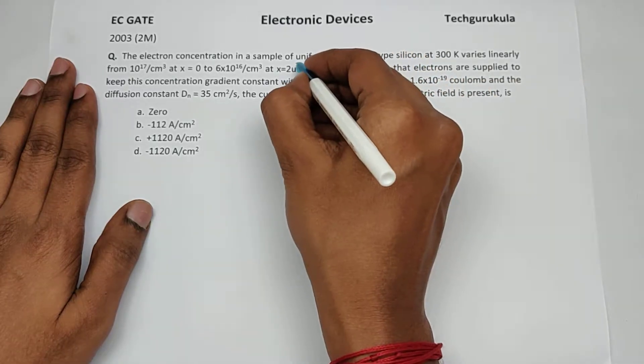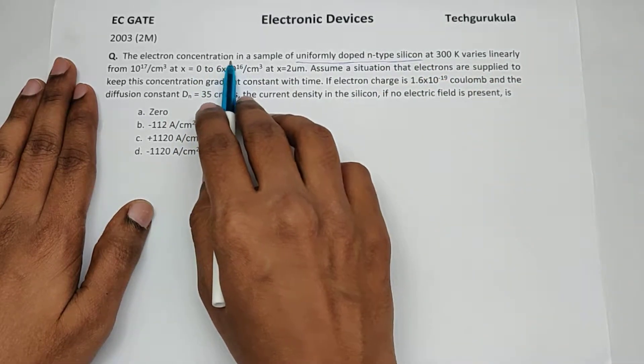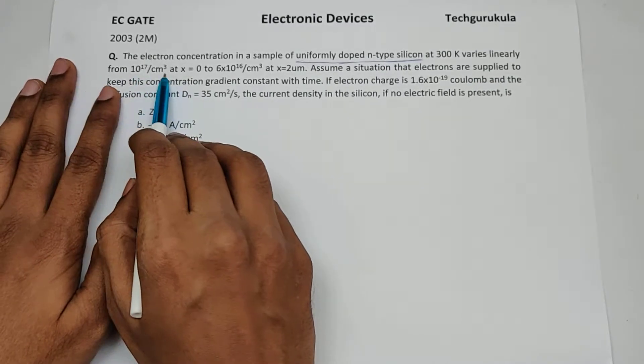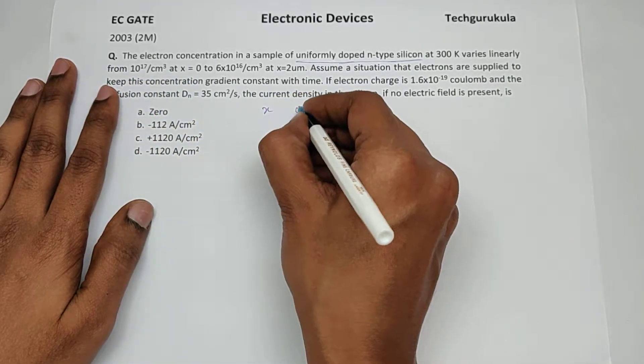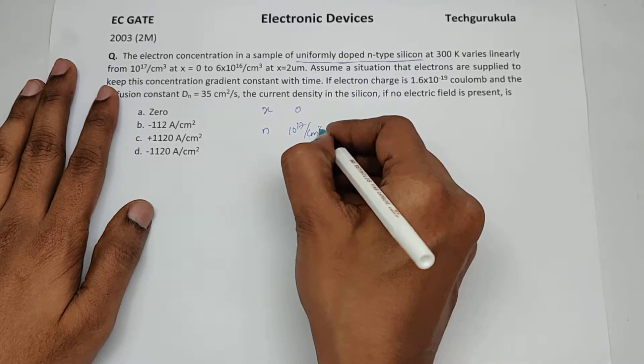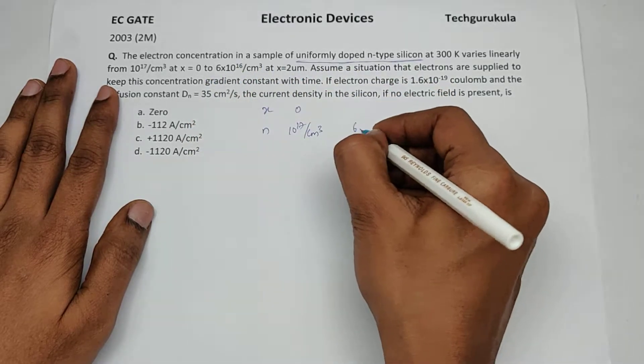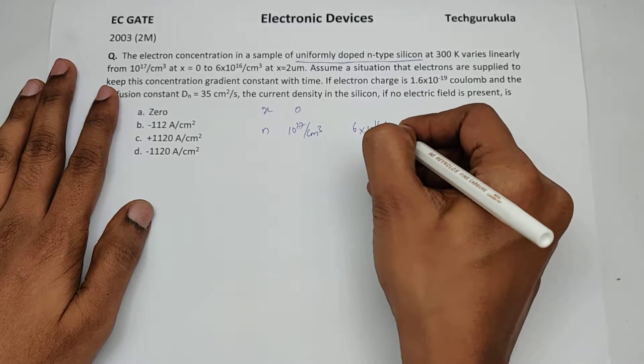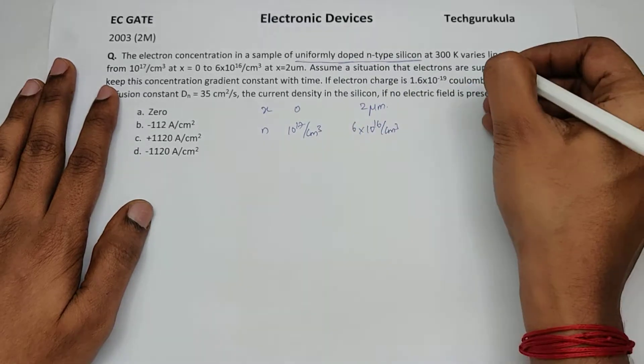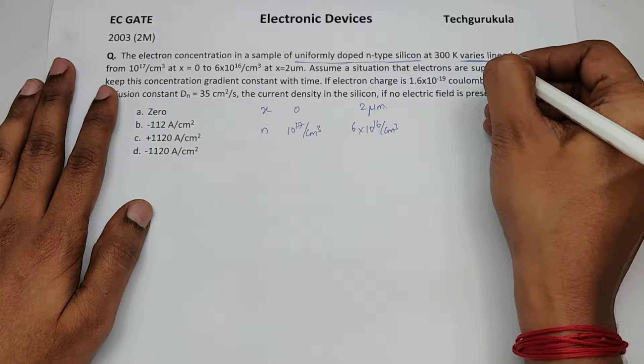You have to note here this is uniformly doped n-type silicon, but the electron concentration varies linearly from 10^17 per cm³ at x equals 0. When x is 0, the electron concentration is 10^17 per cm³ to 6 times 10^16 per cm³ when x equals 2 micrometers. The most important point is they say it is varying linearly.